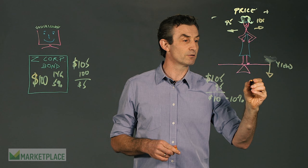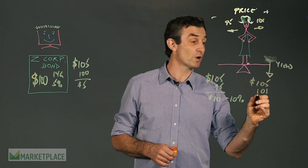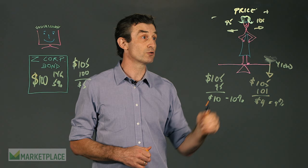Some more math. She's going to get that $105 from Z Corp. She paid $101 for it, which means her profit is going to be $4, which is a yield of 4%. So you can see that as the price rises, so the yield falls.